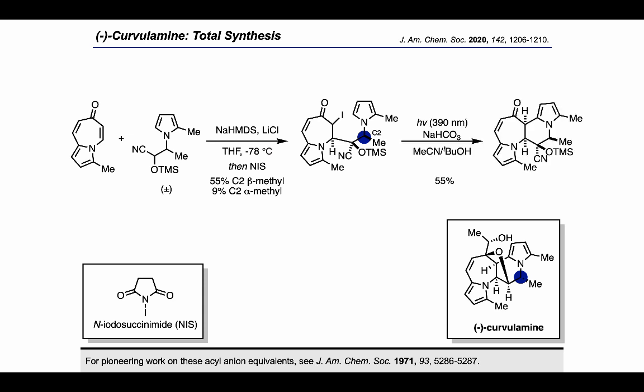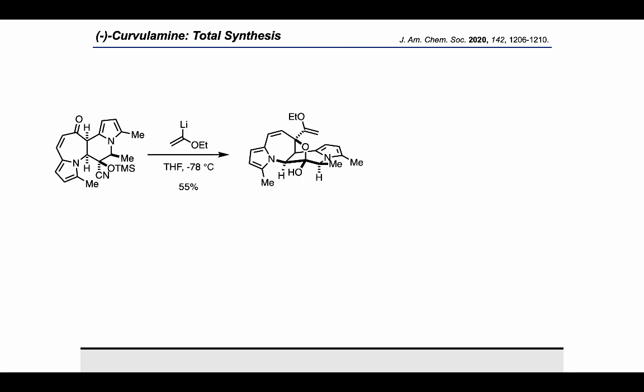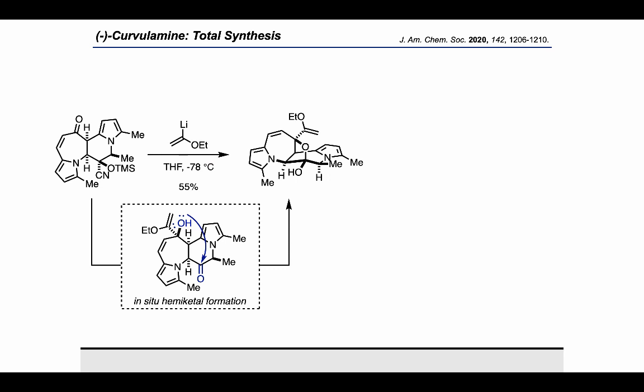Next, photolysis of the carbon-iodine bond using a Kessil lamp allowed them to generate a radical that could be trapped intramolecularly by the pyrrole. They continued by using a lithiated enol ether to attack the northwest ketone in a convex facial addition, which then cyclized to form the hemiketal in situ.